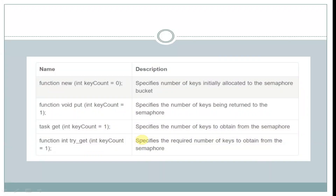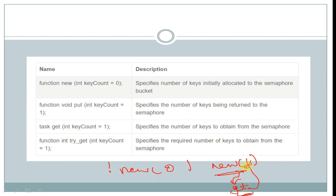Let's see the built-in functions in the semaphore. First, we have the new keyword, which is used to declare the number of keys inside the semaphore. By default, the key count is equal to 0. If we call new(1), the number of keys will be equal to 1. Any process can then get that key, and after completing its process, it should put the key back into the semaphore. With the new keyword, we can create the keys.